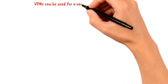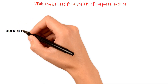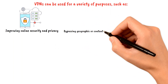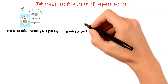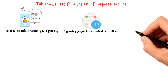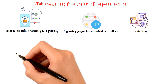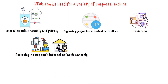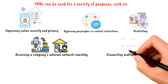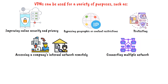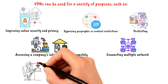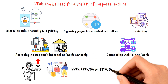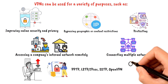VPNs can be used for a variety of purposes, such as improving online security and privacy by encrypting internet traffic, bypassing geographic or content restrictions by providing the user with an IP address from a different location, protecting against online tracking and surveillance, and accessing a company's internal network remotely to allow employees to work securely from home or other locations, as well as connecting multiple offices or sites together securely over the internet. There are various VPN providers and protocols available, such as PPTP, L2TP, IPSec, SSTP, OpenVPN, and others.